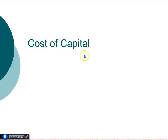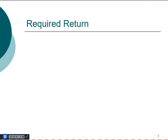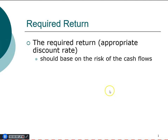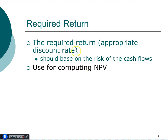Capital here refers to the funding that a firm receives, and the cost is expressed as a percent rather than a dollar amount. The required return is the discount rate we use to compute net present value. One very important thing to remember is that this required return should be based on the risk of the cash flow.